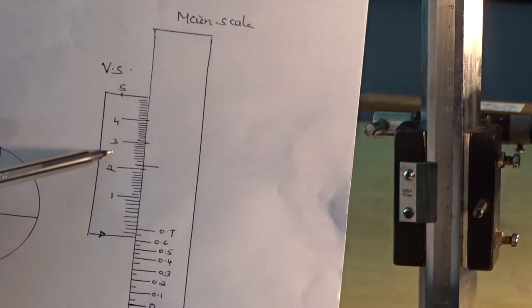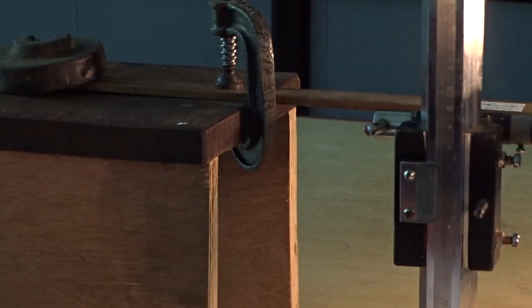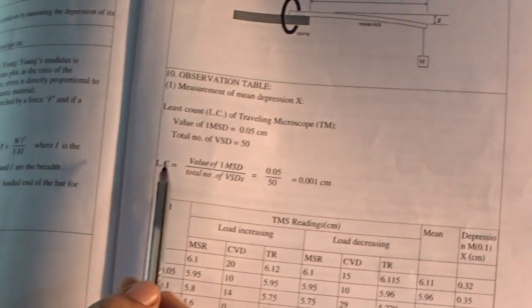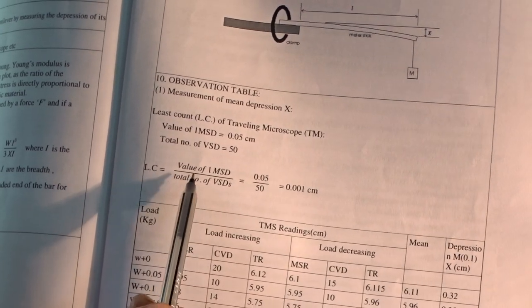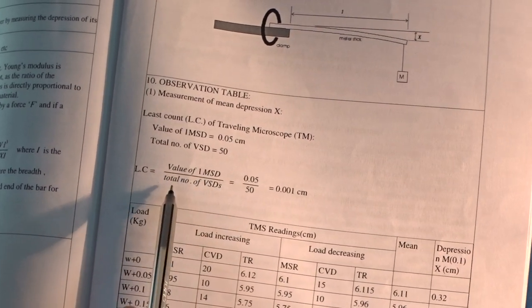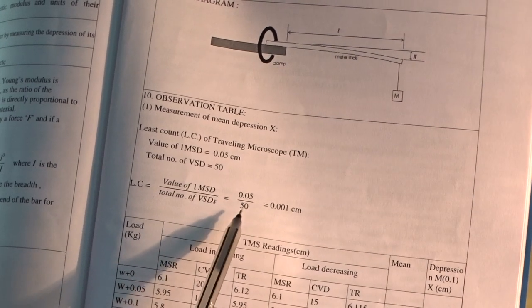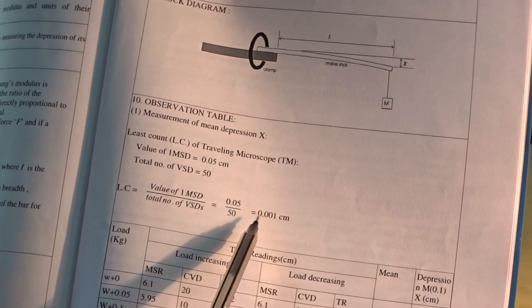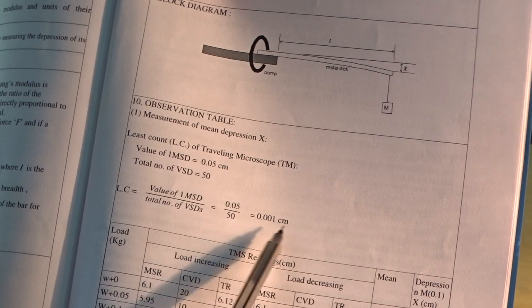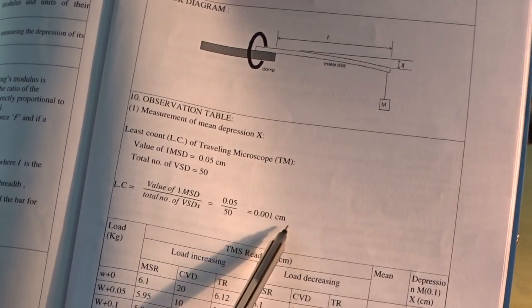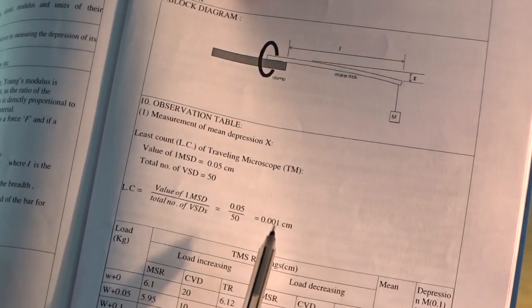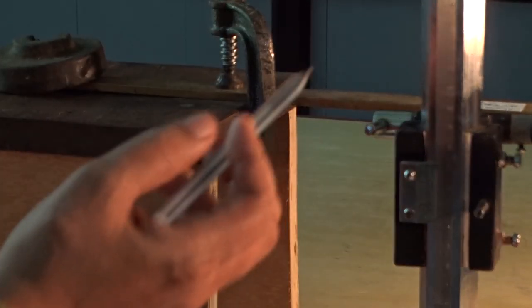So, using main scale and vernier scale of travelling microscope, we will find out least count of travelling microscope. Formula is shown here. Least count is equal to value of 1 MST divided by total number of VSTs. 0.05 divided by 50 that is equal to 0.01 centimetre. So, 0.001 centimetre, it is least count of travelling microscope.